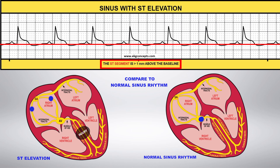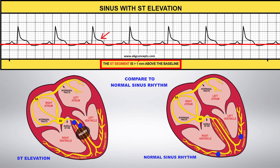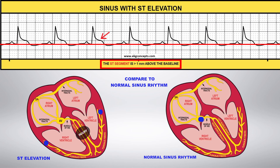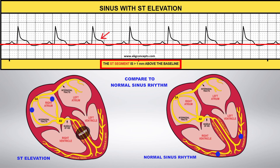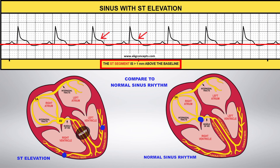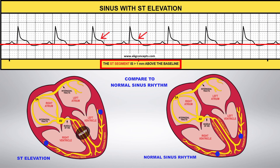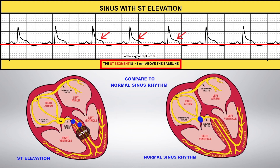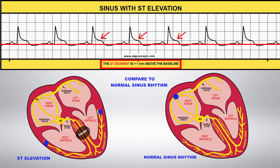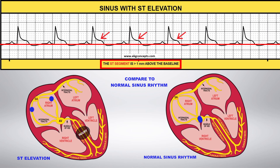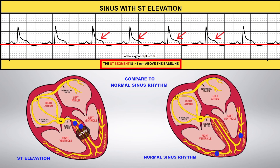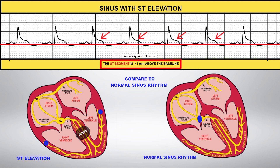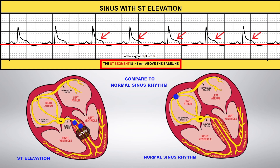When compared to normal sinus rhythm, you can see the ventricles are now having trouble depolarizing, represented by the impulse having to go around the damaged tissue during ventricular depolarization. ST elevation myocardial infarction is the most severe manifestation of coronary artery disease.